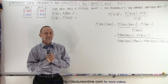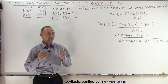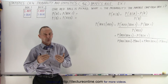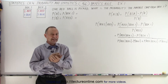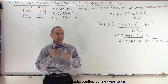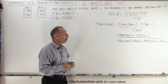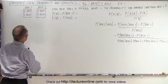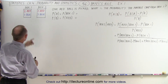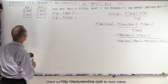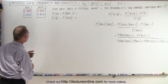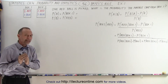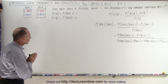Welcome to iLectroOnline. Here's our first example of how to use Bayes' Rule or Bayes' Theorem in trying to find an accurate probability for this particular problem. So let's say we have two boxes. In box one we have two red marbles and one blue marble. In box two we have one red marble and three blue marbles.